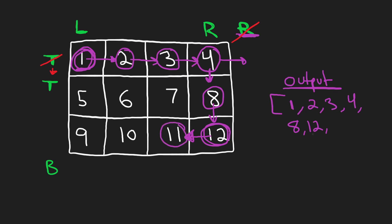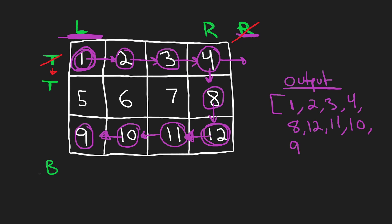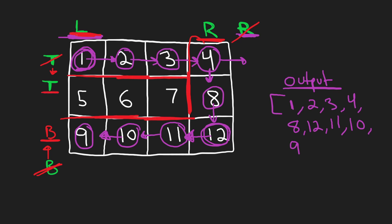We reach 11, add it, keep going left. We get 10, add it, go left one more time, get 9, add it. Now we've finished the entire bottom row. That tells us our bottom boundary can be shifted up by one — our new rectangle is like this. Our right boundary covers this side, bottom boundary this side, top boundary this side, and left boundary this side. So this is the resulting one-by-three rectangle. Now we're going to go up, stopping once we reach our top boundary. We get 5 and add it to our output.